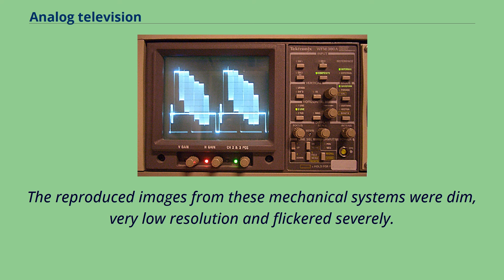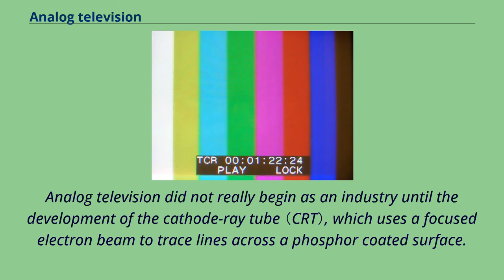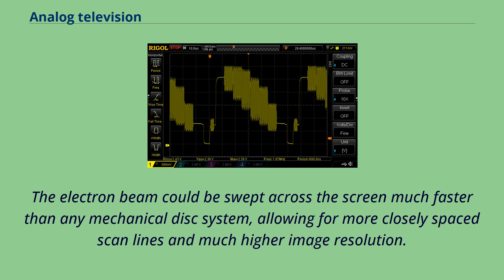Analog television did not really begin as an industry until the development of the cathode ray tube, which uses a focused electron beam to trace lines across a phosphor-coated surface. The electron beam could be swept across the screen much faster than any mechanical disk system, allowing for more closely spaced scan lines and much higher image resolution.